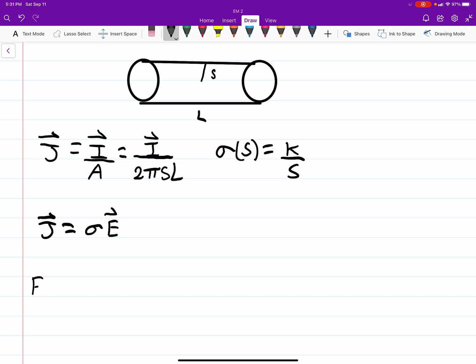Our surface area there for these caps here in the body is 2 pi s L. So our first step is to find the E field.